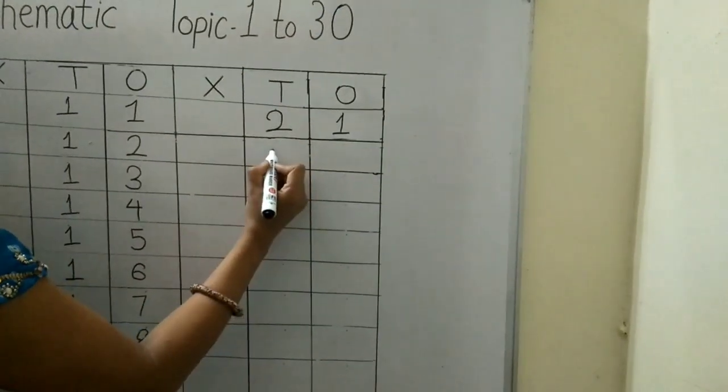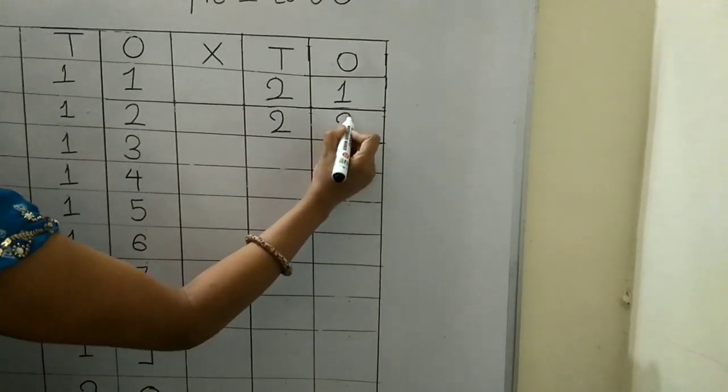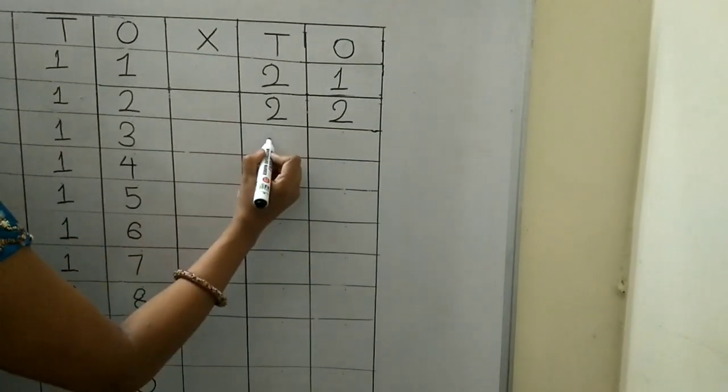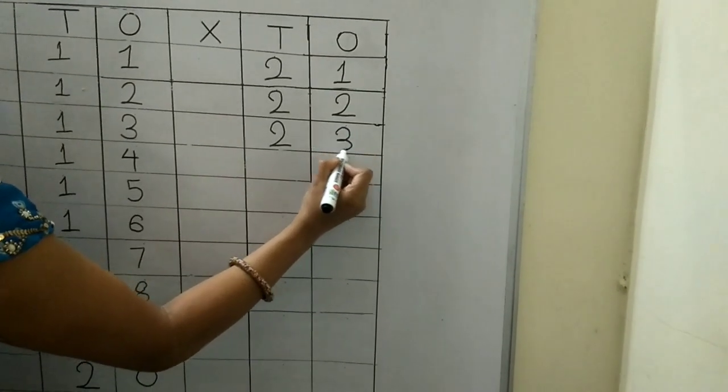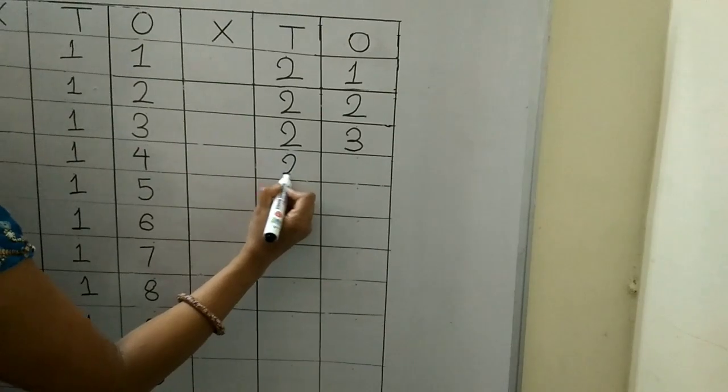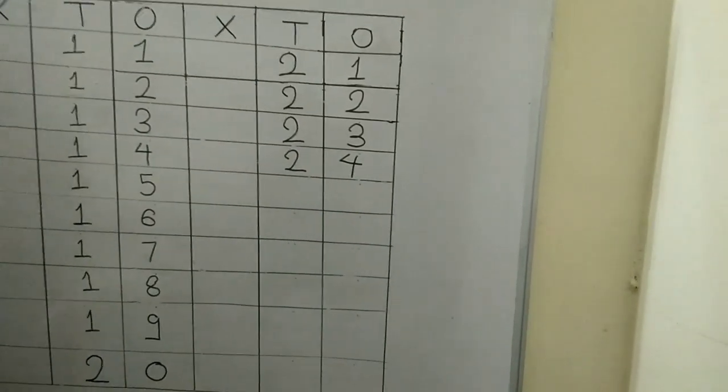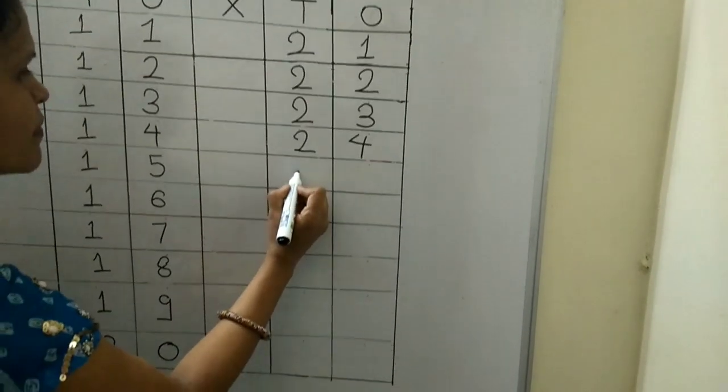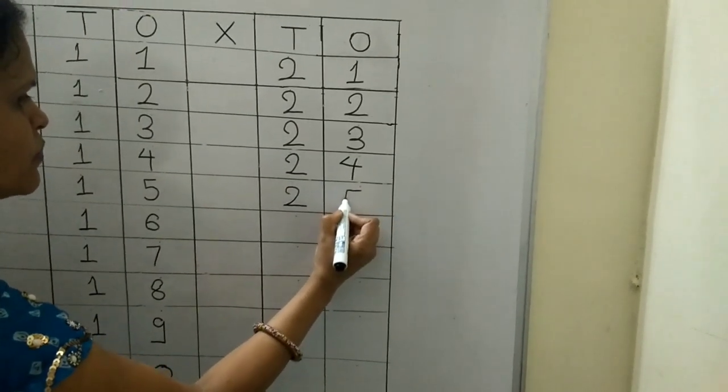2, 1, 21. 2, 2, 22. 2, 3, 23. 2, 4, 24. 2, 5, 25.